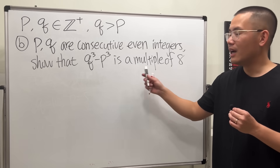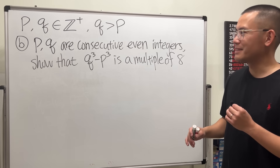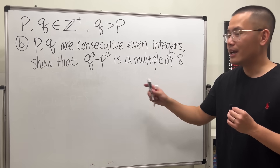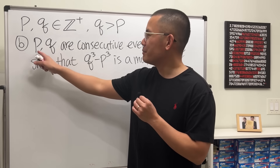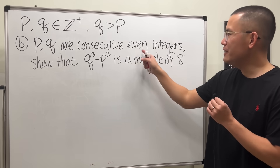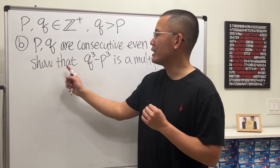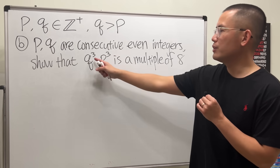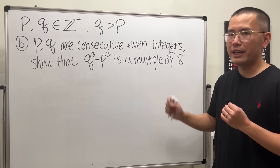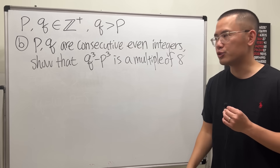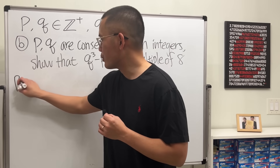Five divides something means that something is a multiple of five. Now, Part B is the last part. Here p and q are consecutive even integers, and we want to show that q³ minus p³ is a multiple of eight. We'll do this using algebra.